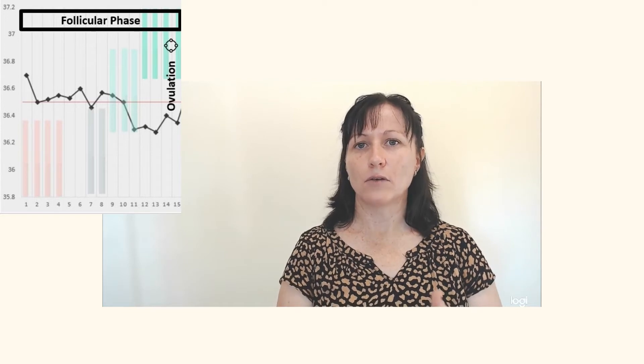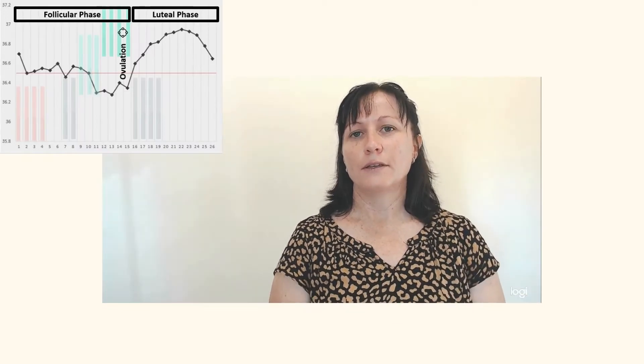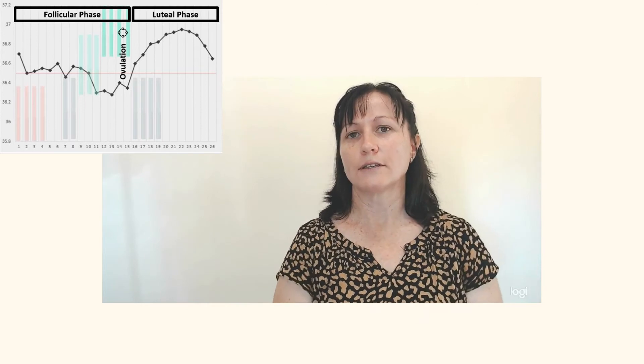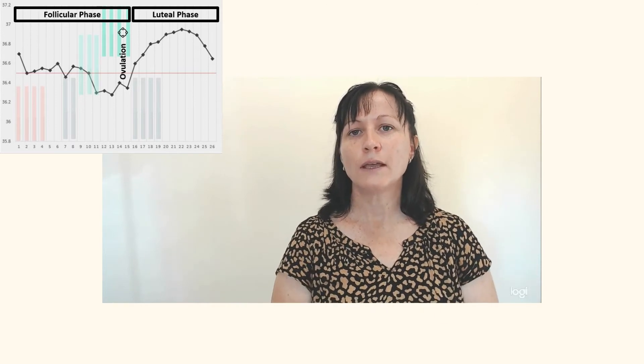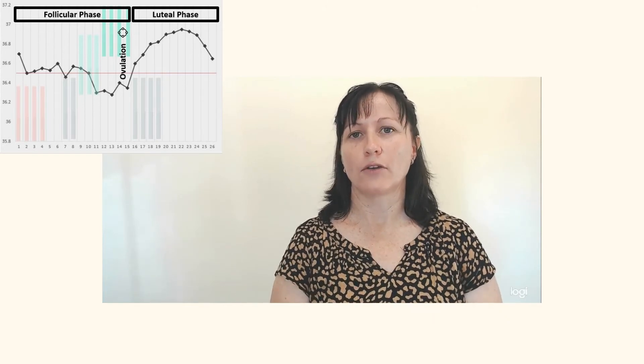It's after you ovulate that the hormonal change will cause your body temperature to jump. So you're looking for this jump in temperatures and now the temperatures will remain in a higher range throughout the rest of the cycle. So by charting your temperatures every day and looking for that pattern of the change from lower to higher, you can now narrow down when your ovulation likely occurred.